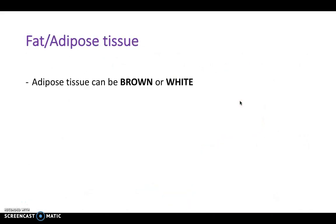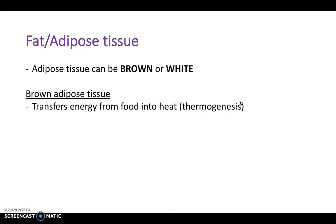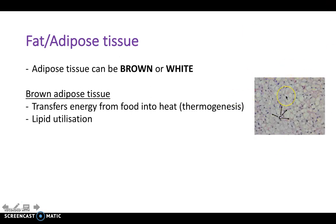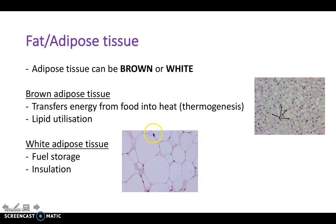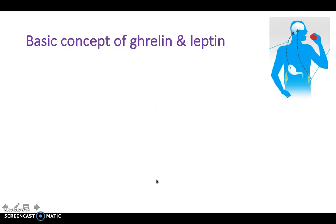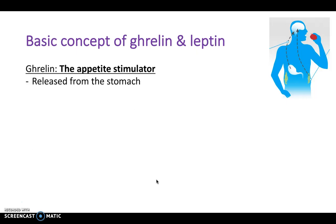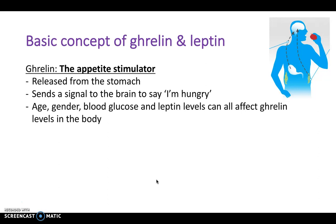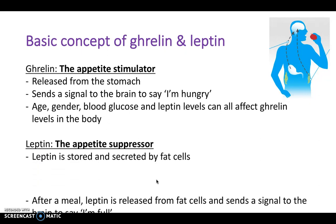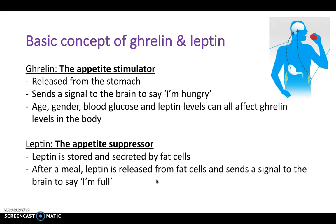Linking this into fat and adipose tissue: adipose tissue can be brown or white. Brown adipose tissue transfers energy from food into heat — in other words it does thermogenesis — and also causes lipid utilization. On the other hand, white adipose tissue is for fuel storage and insulation, and histologically it takes up a lot more space. Ghrelin and leptin are two important concepts. Ghrelin is the appetite stimulator — it's released from the stomach and sends a signal to the brain saying 'I'm hungry, I want food.' Age, gender, blood glucose, and leptin levels can all affect ghrelin levels.